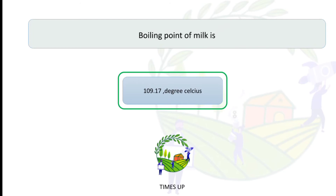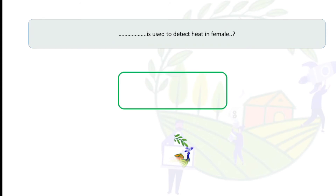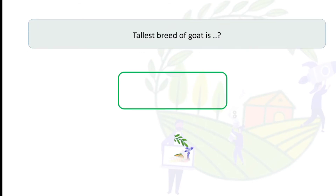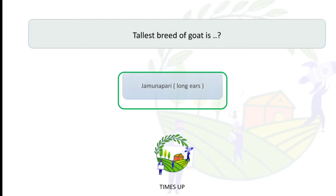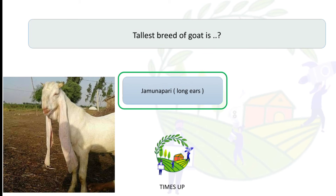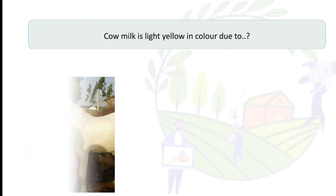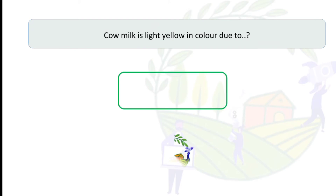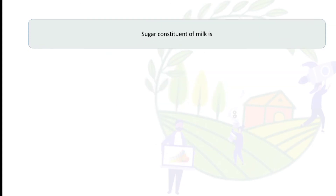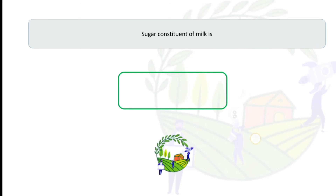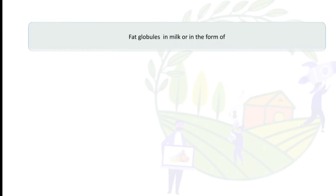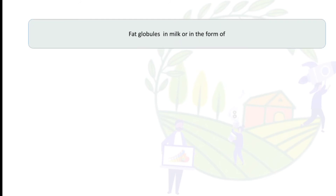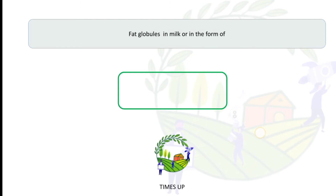The boiling point of milk is 100.17 degrees Celsius. The tallest breed of goat is Jamunapari, which also has long ears as a characteristic feature. Colostrum milk is slightly yellow in color due to the presence of carotene. The sugar constituent of milk is lactose.